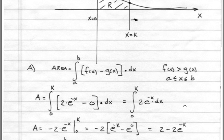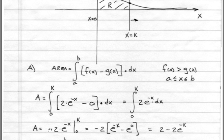If we work through this, we see that area equals minus 2 times e to the minus x evaluated from 0 to k. And this becomes minus 2 times e to the minus k minus e to the 0.